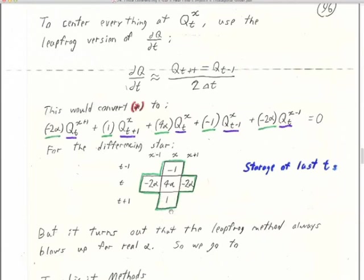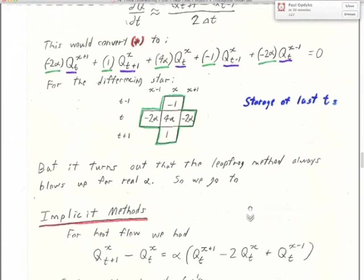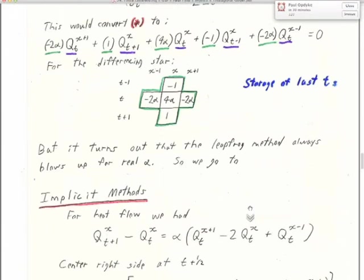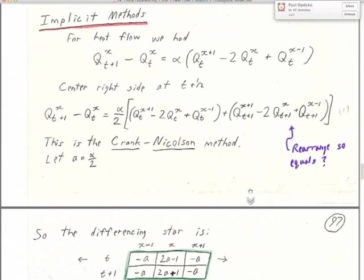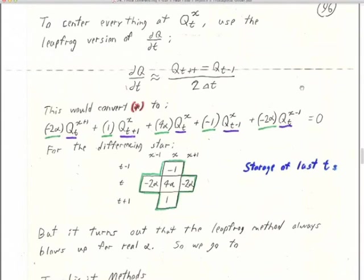That will have some impact in the codes you're using when you try to convert to a leapfrog difference. The code I give you only saves the last t level; here you have to save two t levels as you're getting the next. It turns out the leapfrog method always blows up for a real alpha. So we go to the most popular method. Everything we've looked at so far is called an explicit method — you have three or four existing values and can solve for the fourth or fifth.